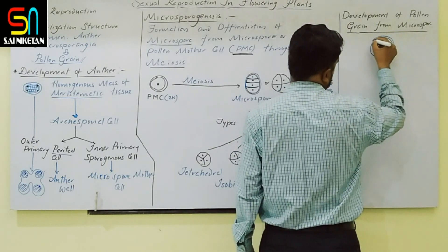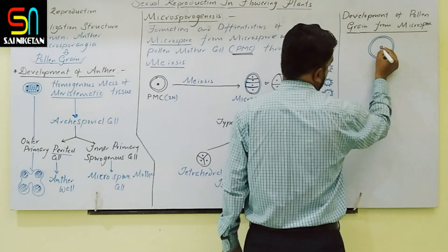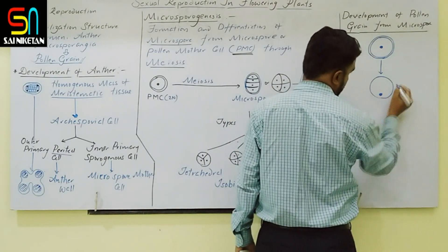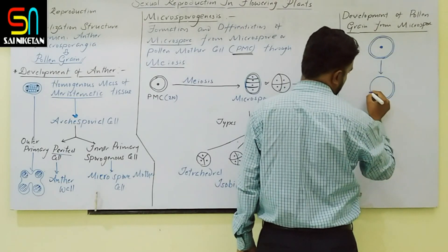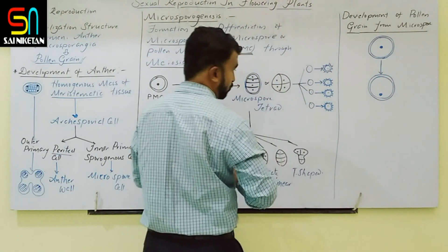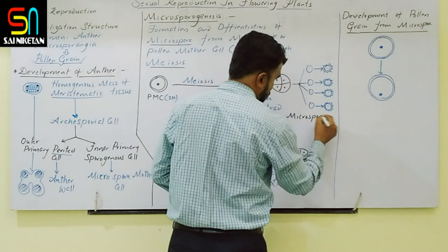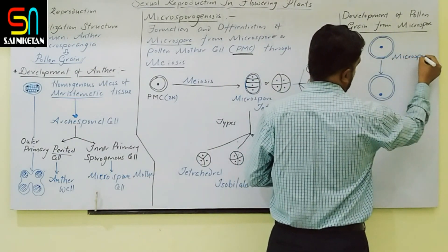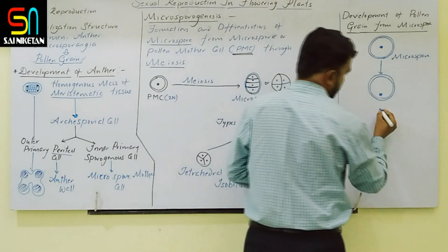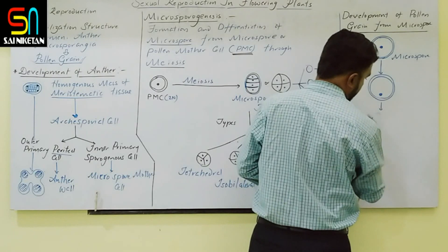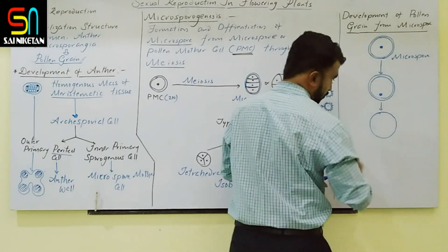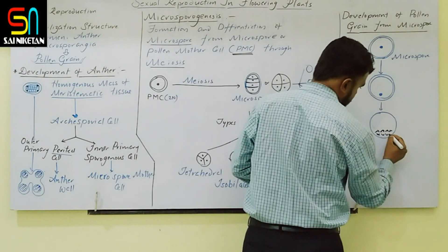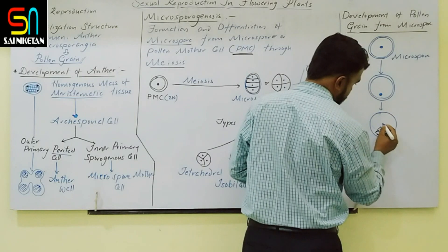The nucleus migrates towards the periphery of the microspore. Due to the formation of an asymmetrical spindle, an unequal mitotic division takes place. This produces two unequal cells: one larger cell with an irregular-shaped nucleus, and one smaller cell.